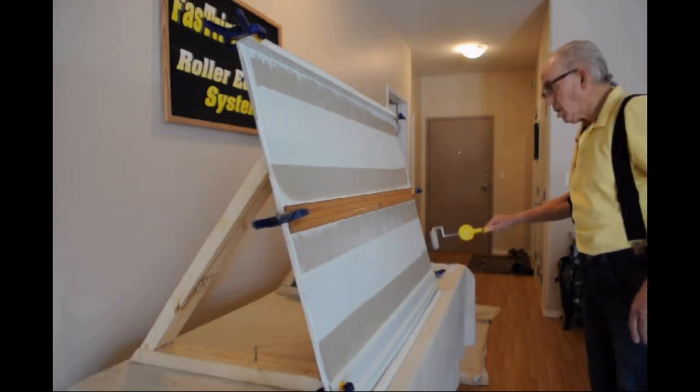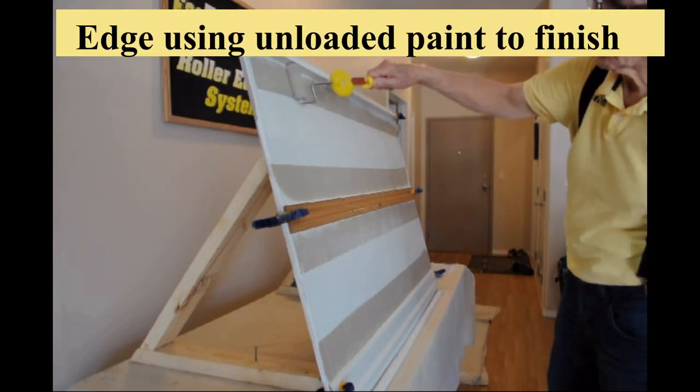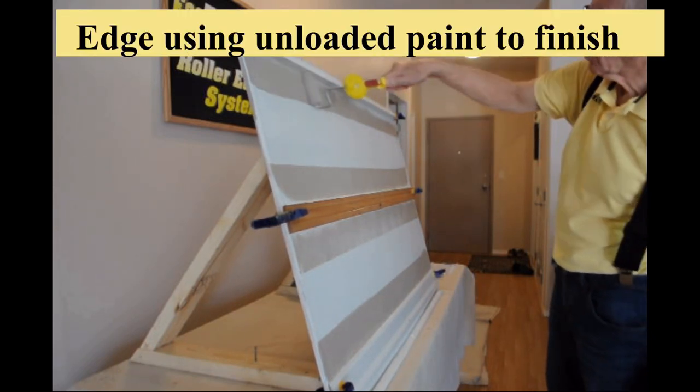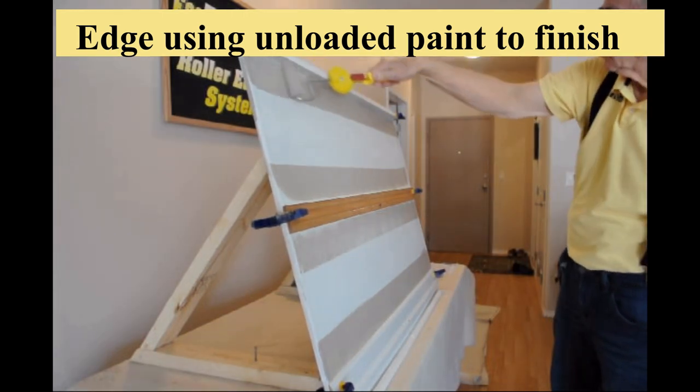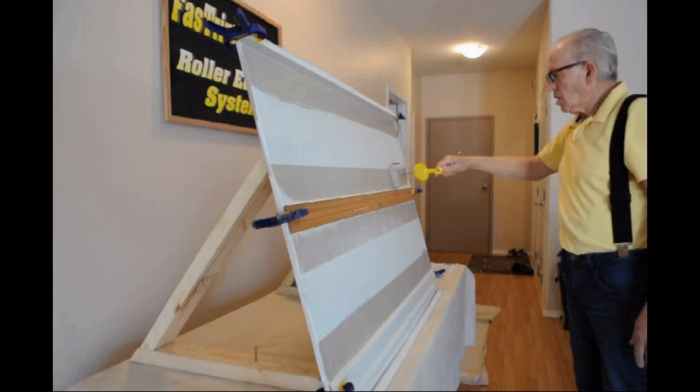Watch it edge next to 16 feet of trim in a single load. You can begin applying some pressure after approximately 12 feet. Finish unloading the roller, then you go back to the beginning and use the excess paint you had unloaded and finish the cut in next to the other trims.